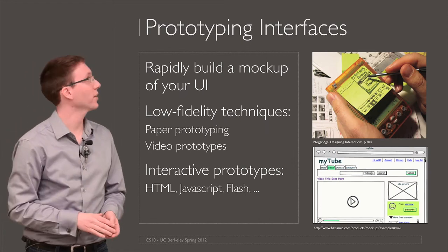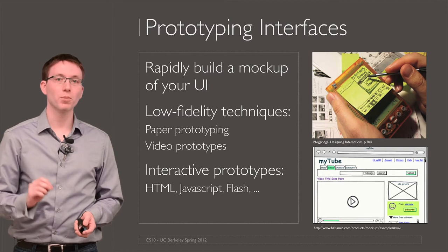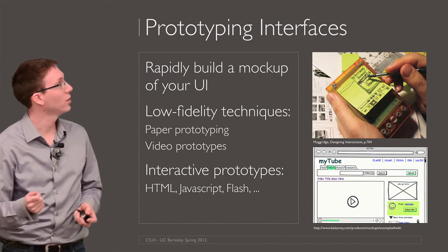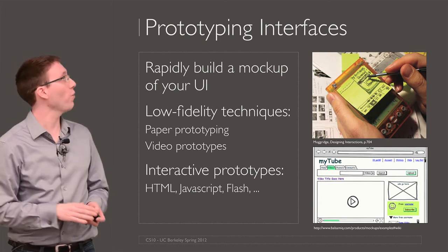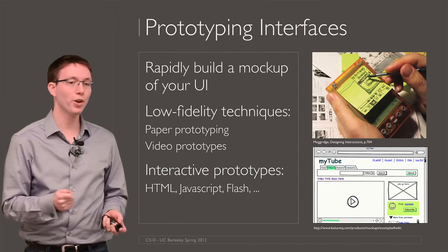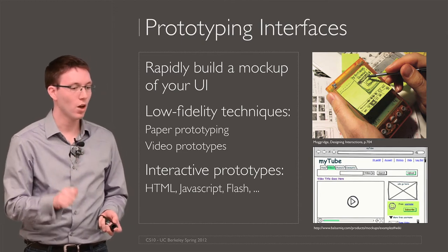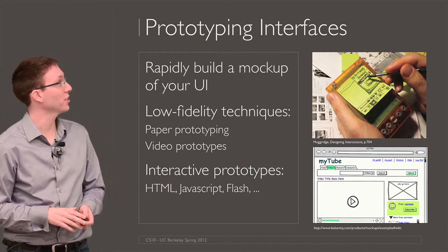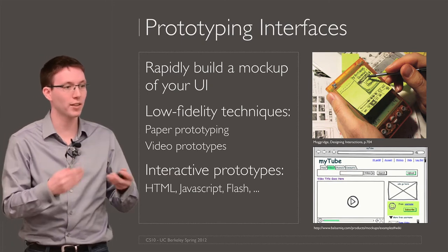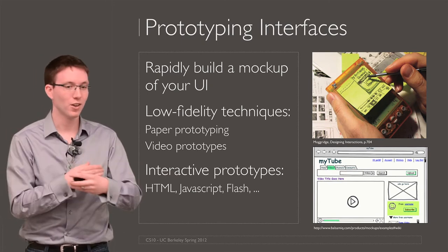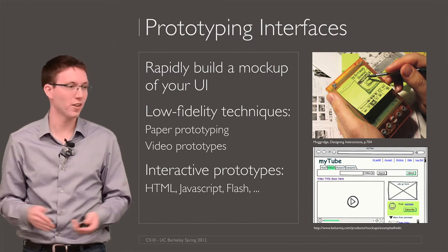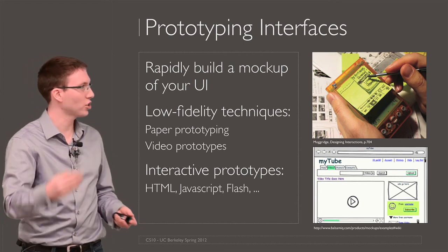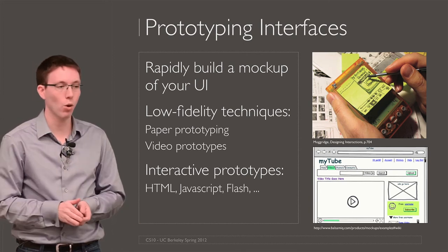The next step is prototyping. One of the chief goals in prototyping is just speed — get something concrete that you can test as fast as possible. There are a bunch of low fidelity techniques, such as paper prototyping, where you just draw what your user interface would look like on a piece of paper and have someone simulate using that paper interface. Or you can make video prototypes that look like the real product, but you never actually wrote a single line of code — it was all done in Photoshop and Illustrator. And there are higher fidelity techniques as well, such as making interactive JavaScript, HTML, or Flash prototypes.